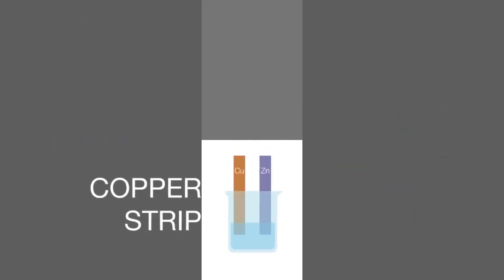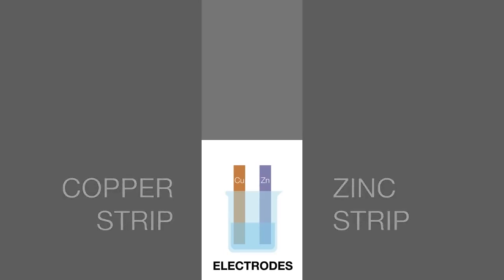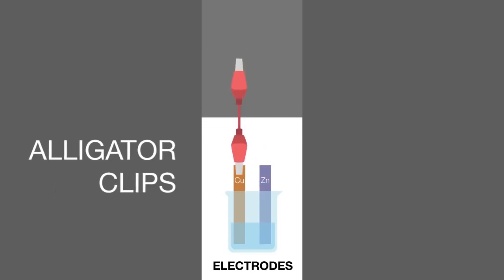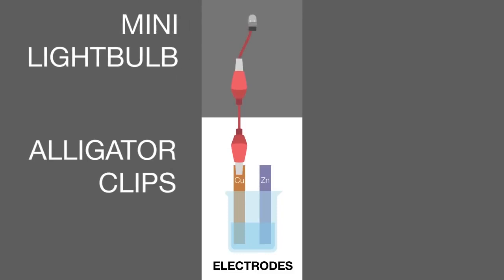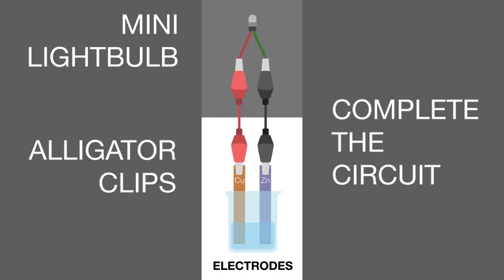Place a strip of copper and a strip of zinc into the solution — these will act as electrodes. Using two alligator clips, connect one strip to one end of the mini light bulb, and another strip to the other end to complete the circuit. You will see that the light bulb lights up, hence this solution conducts electricity.